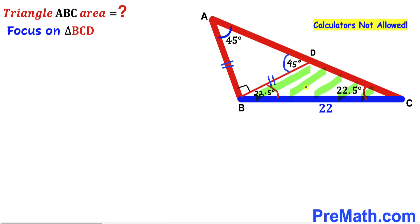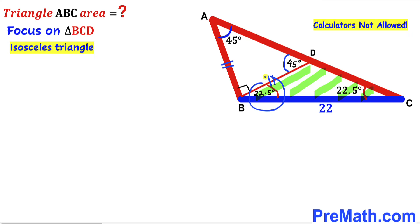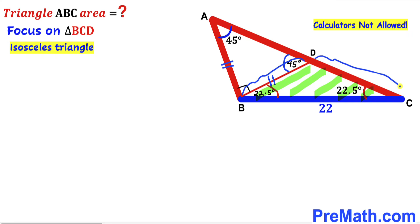Now we focus on triangle BCD, and we can see that triangle BCD is an isosceles triangle as well, since this angle is 22.5 degrees and likewise this other angle is 22.5 degrees. So therefore we conclude that side BD is equal to side CD.